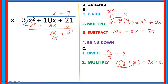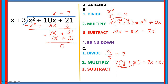Write your answer below the dividend. Next step is you are going to subtract: 7x plus 21 minus (7x plus 21). If you observe, they both have the same expression, so when you subtract them they are all equal to 0. So the quotient in this problem is x plus 7.